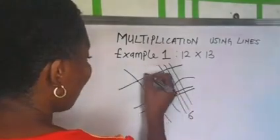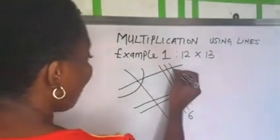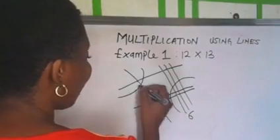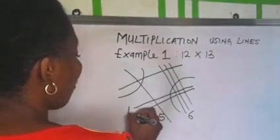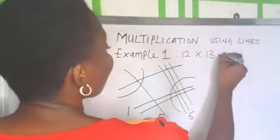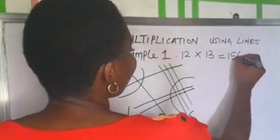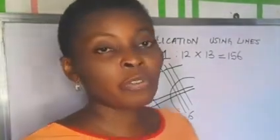For this middle one, we have one, two, three, four, five. And for this one, we have one. So, our answer for twelve multiplying thirteen is one, five, six. One hundred and fifty-six.